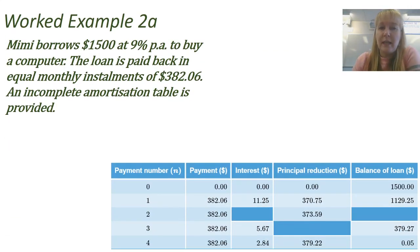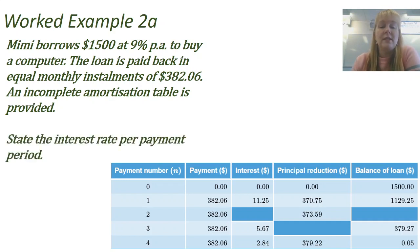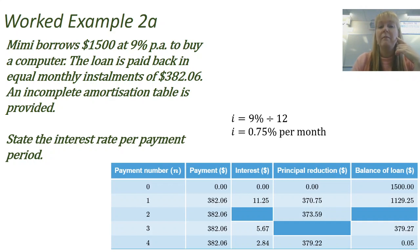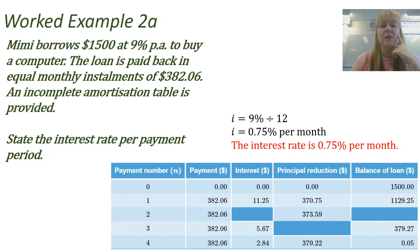Now we're going to work through a different example. Mimi borrows $1,500 at 9% to buy a computer. The loan is paid back in equal monthly installments of $382.06, and we've been given an incomplete amortization table. The first question is to state the interest rate per payment period. We know it's 9% per annum, and since payments are monthly we divide by 12, giving 0.075% per month.